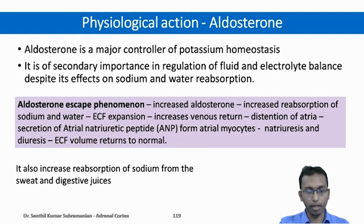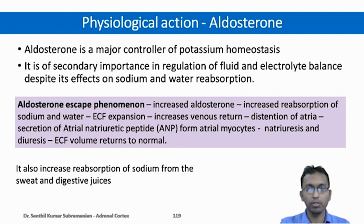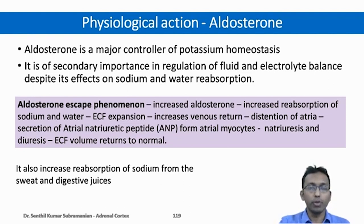Aldosterone escape phenomenon: if aldosterone is increased by any means, there is increased reabsorption of sodium and water, leading to ECF expansion, which increases venous return. Distension of the atria results in secretion of atrial natriuretic peptide from atrial myocytes. This natriuretic peptide causes natriuresis (sodium excretion in urine) and diuresis, returning ECF volume to normal. Hence, increased aldosterone alone cannot permanently increase ECF volume by itself — this is the aldosterone escape phenomenon. Aldosterone also increases reabsorption of sodium from sweat and digestive juices.